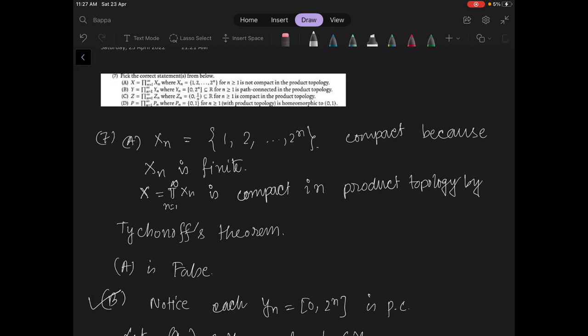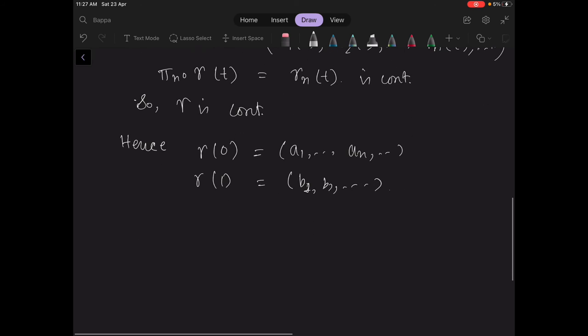Now option C says that z equals product of zn, where zn equals 0 comma 1 upon n, which is a subset of R. Let us check if it is compact. Notice 0 comma 1 equals z1 is not compact.